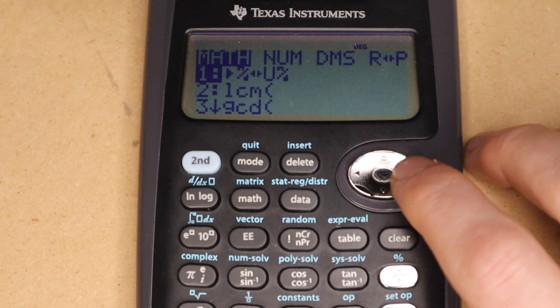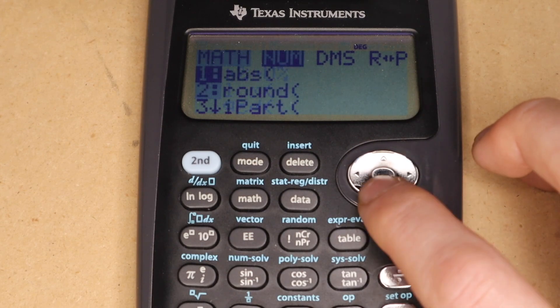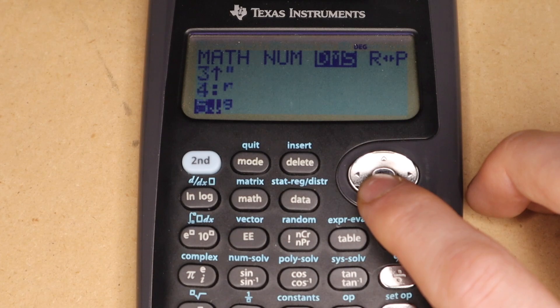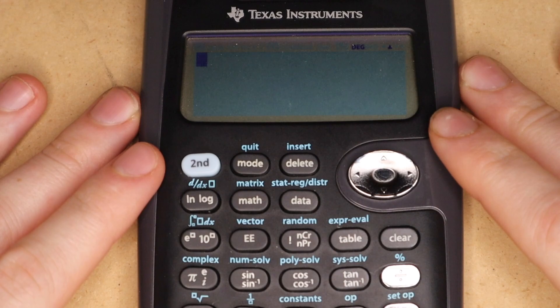There's also this math menu, which has quite a few not very commonly used calculator functions that you can see here. This menu right here is pretty much all for calculating between different angle measures. So that's pretty much it for a summary of the features.